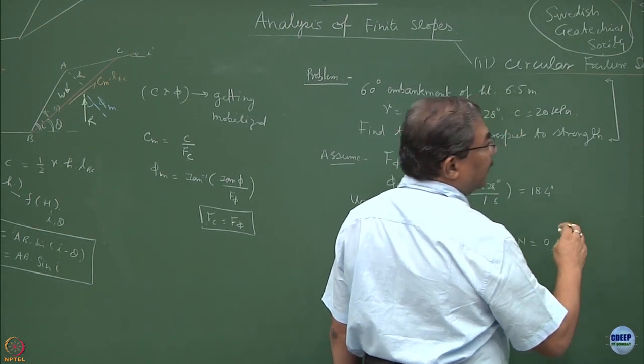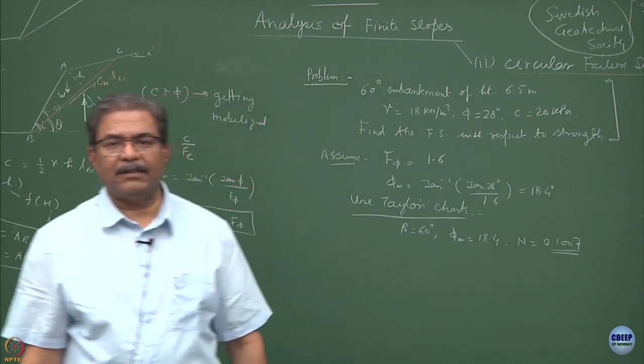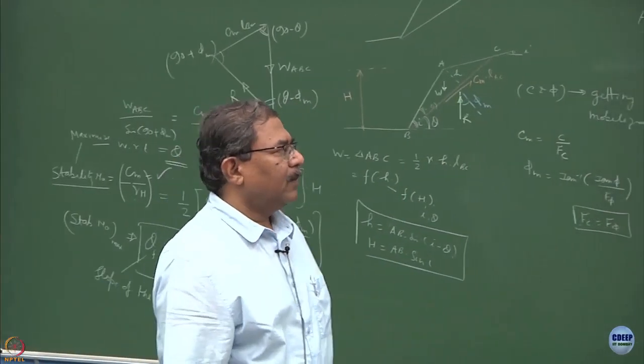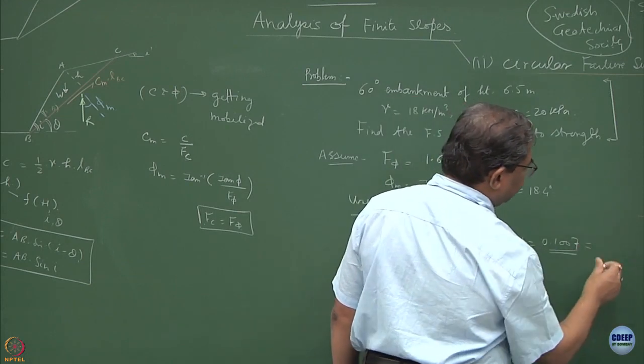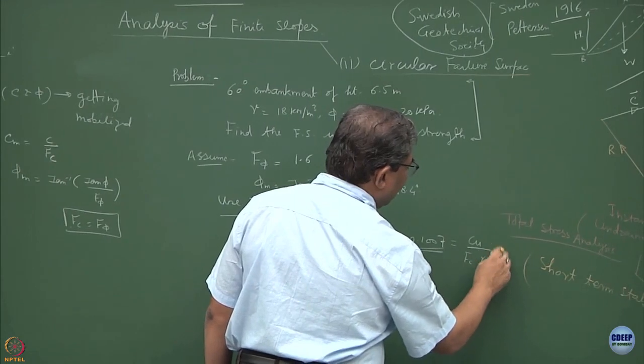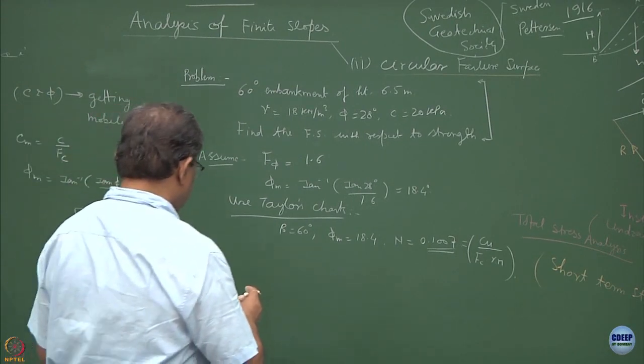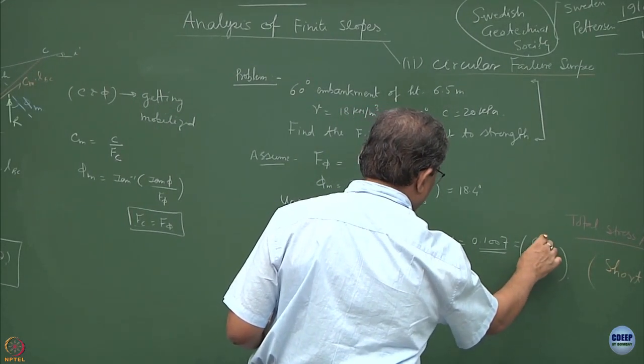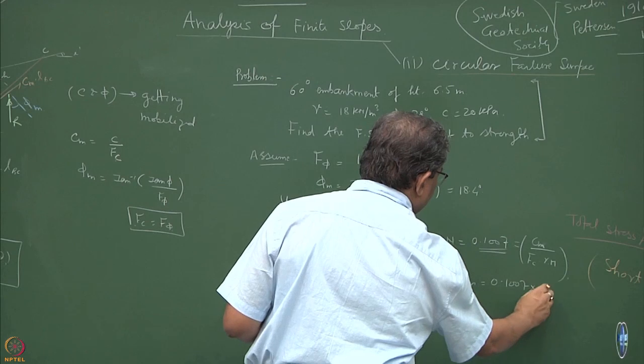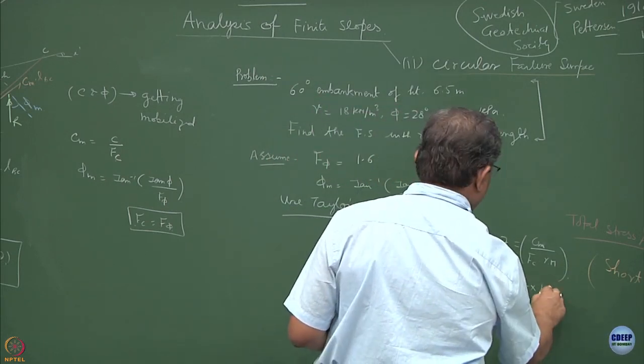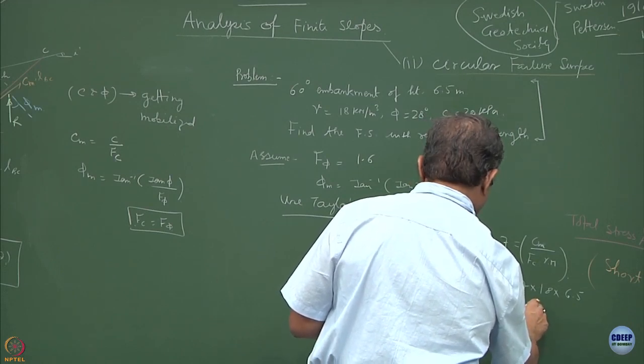It is always better to use the empirical relationships, analytical solution, substitute the values and obtain it rather than seeing the graphs. Most of the softwares which are commercially available include these parameters which are inbuilt. If I know the value of N which is equal to Cu over Fc into gamma H, what I can obtain from here? I can obtain the value of Cu which is nothing but Cm the mobilized value. This will be equal to 0.1007 into gamma, gamma is 18 into H, H is 6.5. This turned out to be 11.78 kPa.